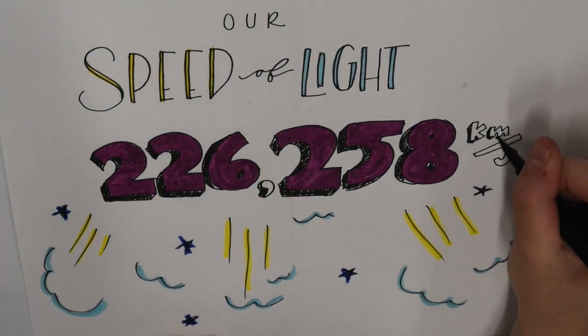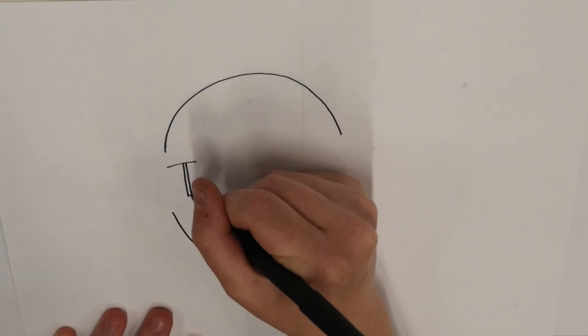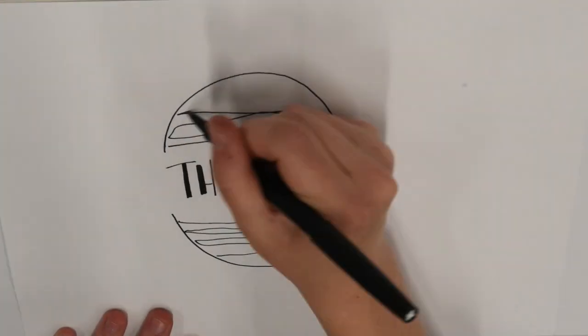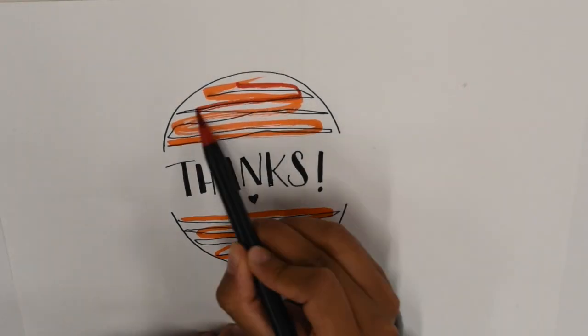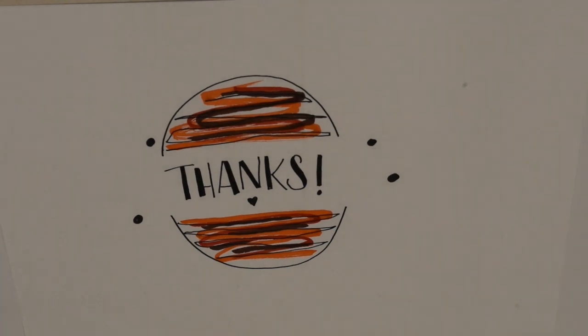Overall, Jupiter's moons have been very important to scientific progress. We think it's super cool that we could recreate calculations done hundreds of years ago with more specific data and end up with a speed of light close to the accepted value. Also, we would like to thank Professor Choi for all the help.